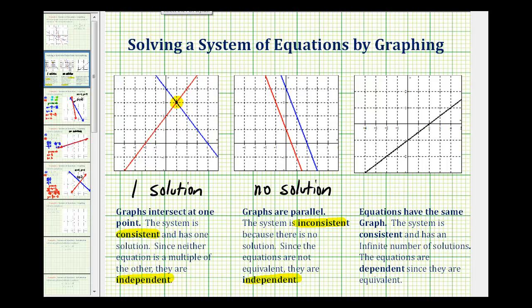The last outcome is if the two lines are on top of one another or they coincide, and because they have an infinite number of points in common, the system has an infinite number of solutions.